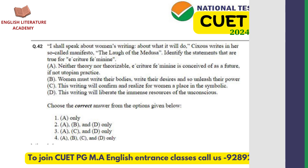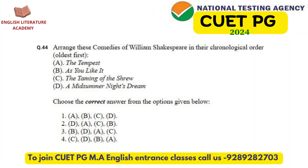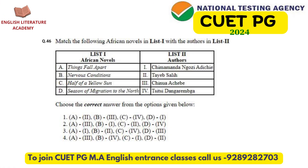Question 43 mentions four novels and students are asked about one common characteristic that prevails in all of them. There is an extract in question 45 where the literary device used needs to be identified. Question 46 contains two lists to be matched — one with names of African authors and the other with novel names written by them.